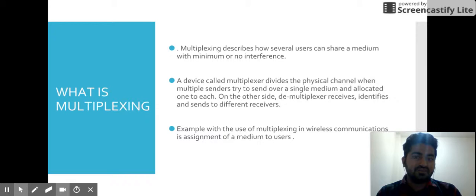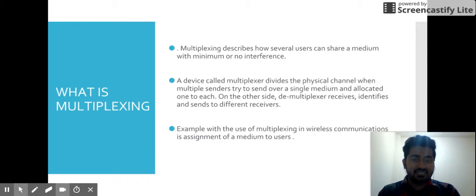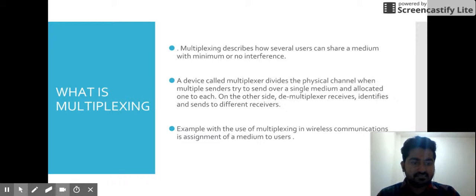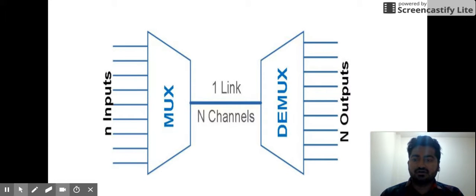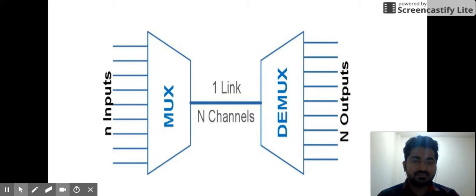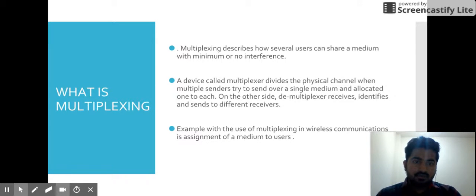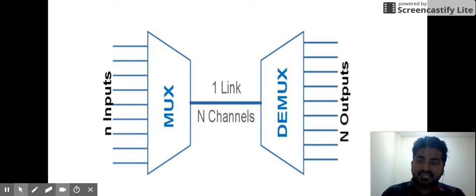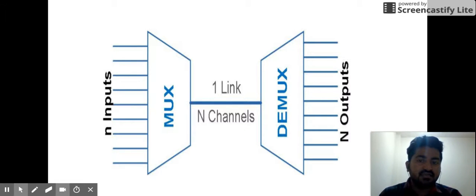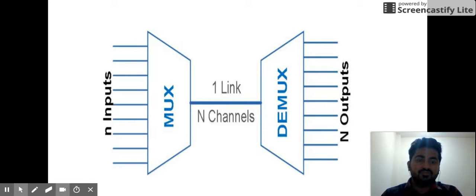We have a device called a multiplexer that divides the physical channel when multiple senders try to send over a single medium and allocates one to each. On the other hand, the demultiplexer receives, identifies, and sends to different receivers. Like we have various senders as inputs, a multiplexer receives those various inputs and sends them over one link, and then a demultiplexer extracts and converts them back into n number of outputs.